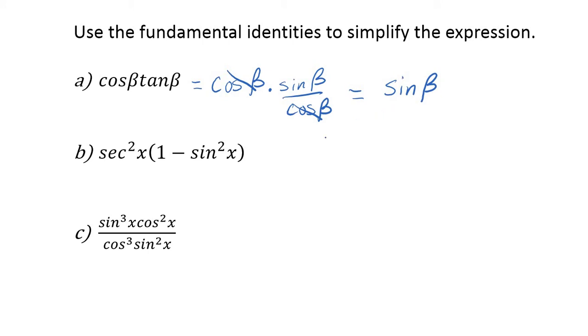This one looks a little more complicated: secant squared times one minus sine squared. Let's see what we can do here. Secant squared, well that is one over cosine squared. I don't have the formulas up here, but you've got your trig sheet in front of you, and you'll become more familiar with these as you work with them.